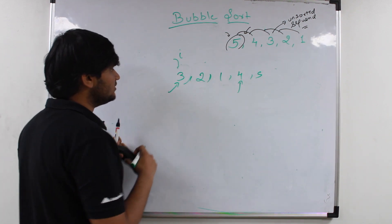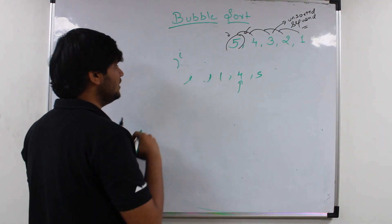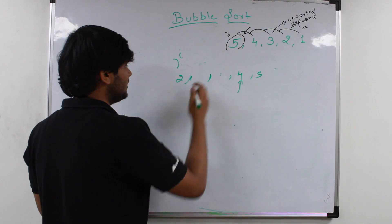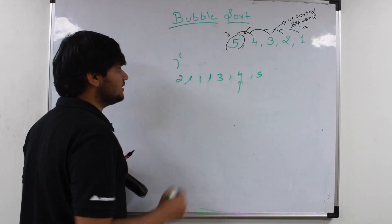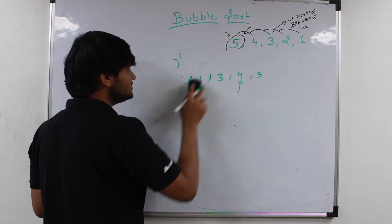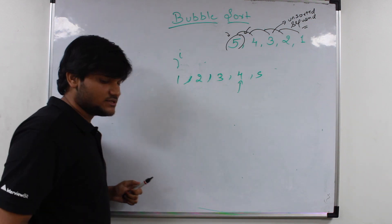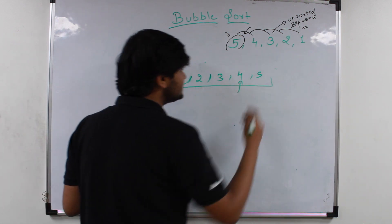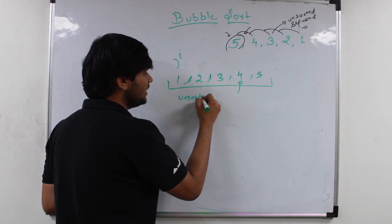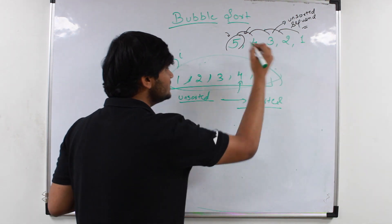Now if you compare 3: we will start again from i equals 0 and compare i with the next corresponding element. So 3 and 2 will be compared — 2 will come here and 3 will come here. Again 3 and 1 will be swapped — 1 comes here and 3 comes here. Now if we just compare 3 and 4, no swapping will occur because 3 is lesser than 4. At last we will just compare 2 and 1 — 1 will come here, 2 will come here. 2 is also present at its best position and 1 is also present at its best position. So here you can see that at every iteration we were just bubbling up the maximum possible element from the unsorted sequence and placing it into the sorted part.